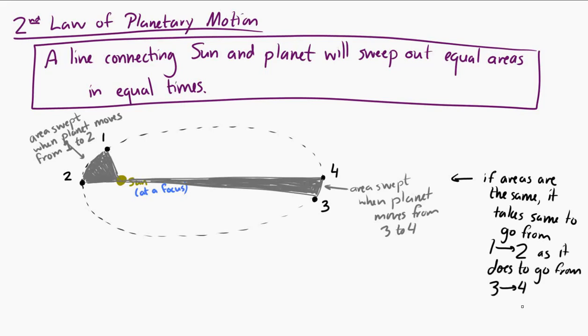So what's that telling us? If it takes the same amount of time to go from 1 to 2 and from 3 to 4 because those are equal areas, then the planet is moving faster when it's closer to the sun, and the planet is moving more slowly when it's further from the sun. And this law tells us exactly how much faster and exactly how much slower it's moving at each point.